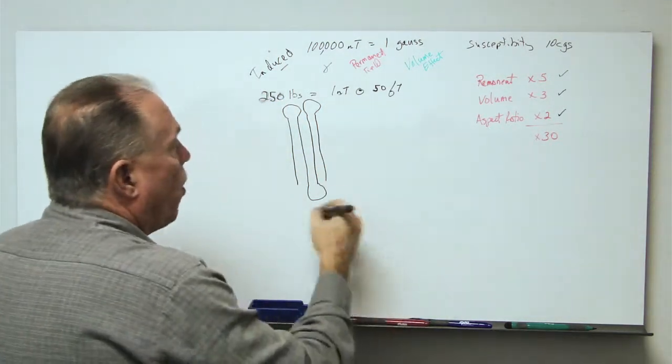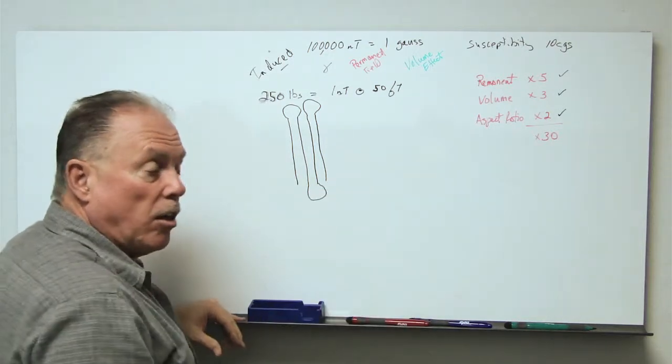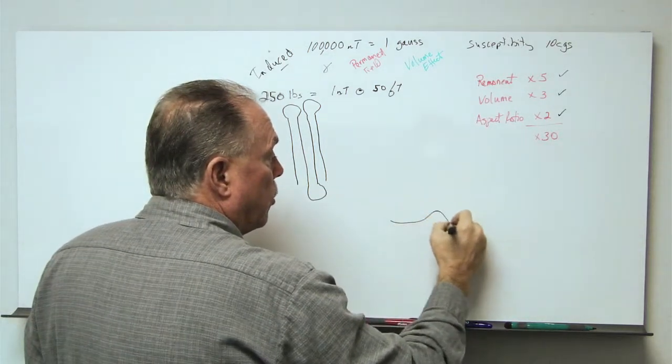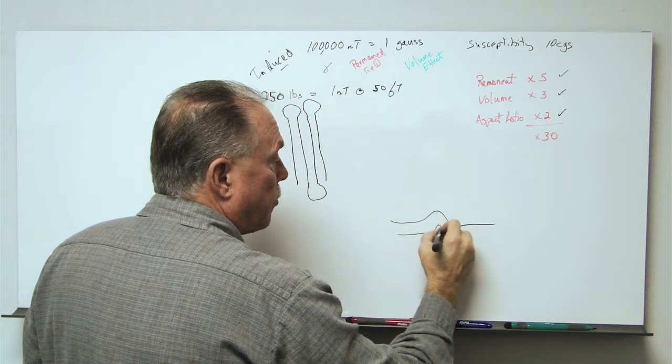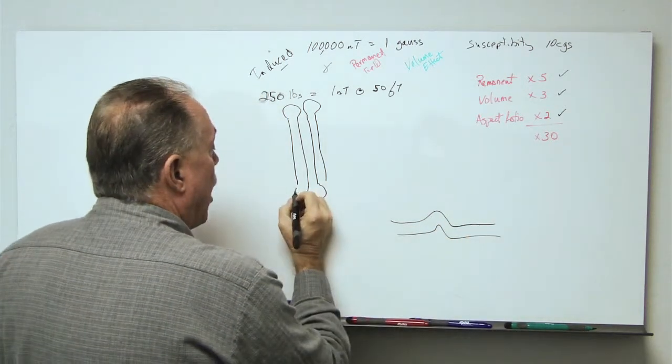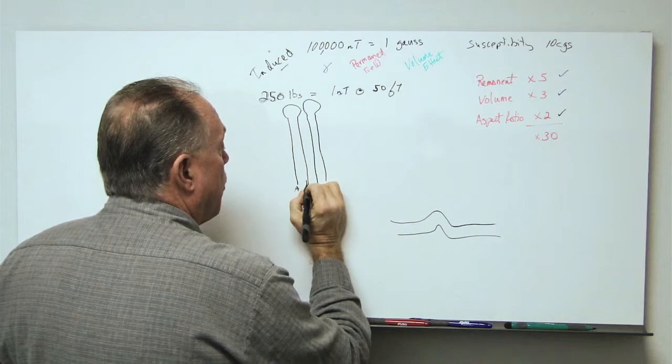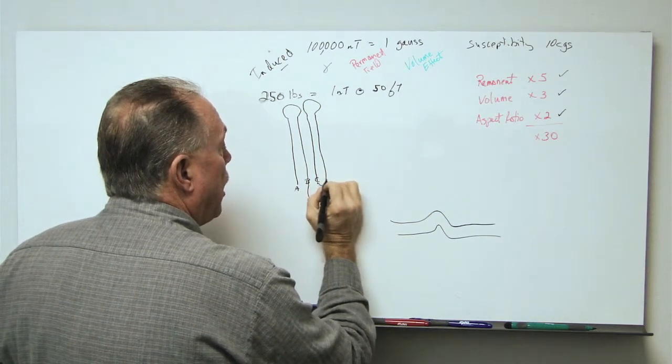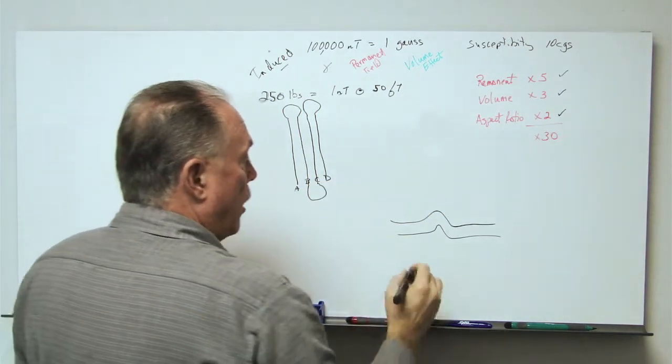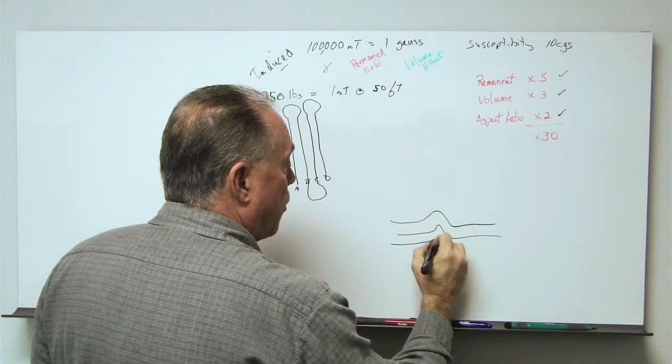Well, what we normally do, there are two ways of presenting this data. One is to stack the profiles. So this is line A, this is line B, C, and D. And essentially we can stack the profiles.